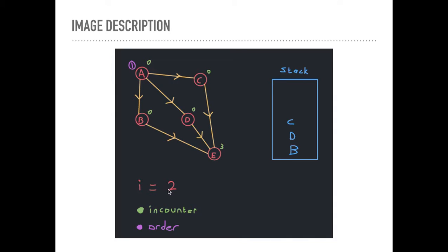And then we said for each edge E in the out-incident edges. So look at all the outgoing edges from A. Which is this edge, this edge, and this edge going to C, D, and B.